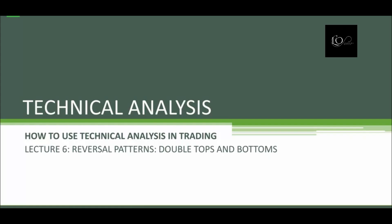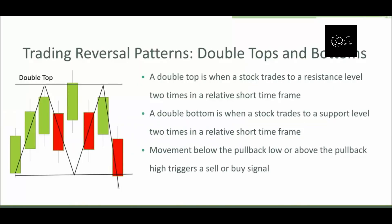Today we're going to be talking about reversal patterns, and specifically the double top and the double bottom. A double top is when a stock trades up to a resistance level two times in a relatively short time frame. And a double bottom is when a stock trades down to a support level two times in a relatively short time frame.